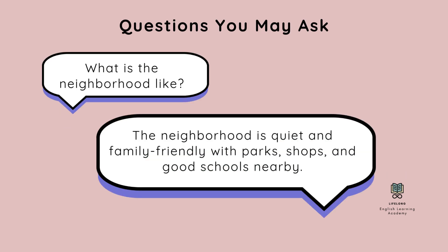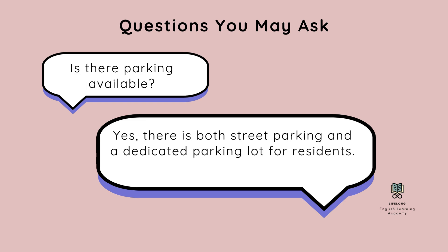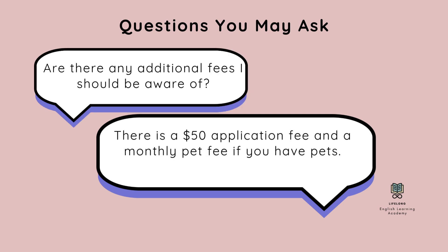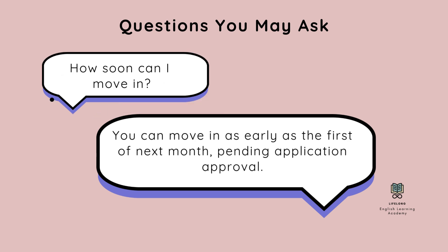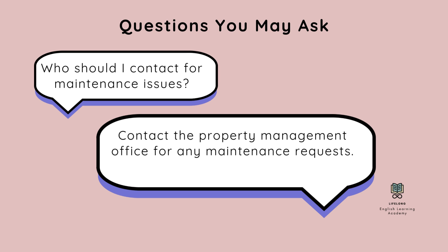Now let's look at some questions you may ask. What is the neighborhood like? The neighborhood is quiet and family-friendly with parks, shops, and good schools nearby. Is there parking available? Yes, there is both street parking and a dedicated parking lot for residents. Are there any additional fees I should be aware of? There is a $50 application fee and a monthly pet fee if you have pets. How soon can I move in? You can move in as early as the 1st of next month, pending application approval. Who should I contact for maintenance issues? Contact the property management office for any maintenance requests.